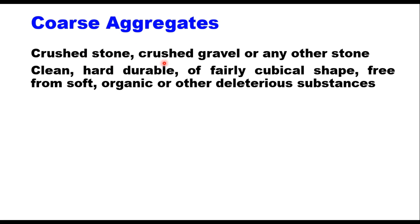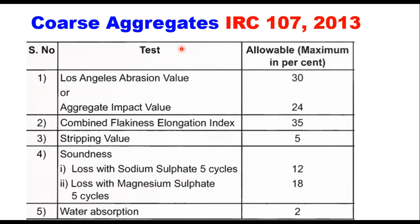Coarse aggregate for mastic — crushed stone, crushed gravel or any other stone which is clean, hard, durable or fairly cubical shape, free from soft, organic or other deleterious material — can be used as coarse aggregate in mastic asphalt. Physical requirements as suggested in IRC 107 for coarse aggregate to be used in mastic are as follows.